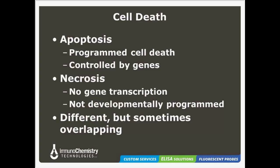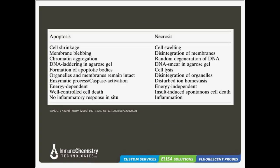In looking at necrosis, this process is not programmed and does not rely on gene transcription. Rather, this is a pathological event that happens when there is trauma to cells. As we can see in this table, there are some very real differences in the features of apoptosis and necrosis. Apoptosis is generally characterized by the shrinking of the cells, membrane blebbing, and condensation of the chromatin. These cells then fragment into small apoptotic bodies that are phagocytized by macrophages, meaning there is no associated inflammation with apoptosis. In contrast, necrotic cells and mitochondria swell up, the DNA degenerates, and the membrane disintegrates and induces a huge inflammatory response.